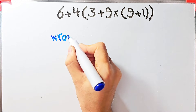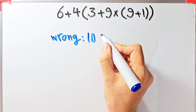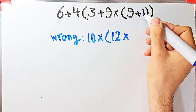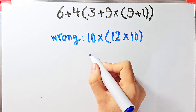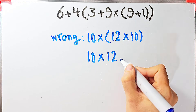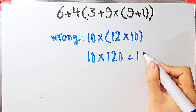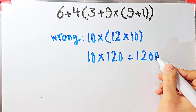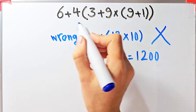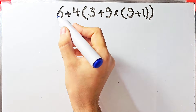For example, some people solve this question like this: they say 6 plus 4 equals 10, then 10 times 3 plus 9, which equals 12, then times 9 plus 1, which equals 10. After that they simplify the parentheses: 12 times 10 equals 120, and 10 times 120 equals 1200. They say the final answer equals 1200, but this answer is wrong.